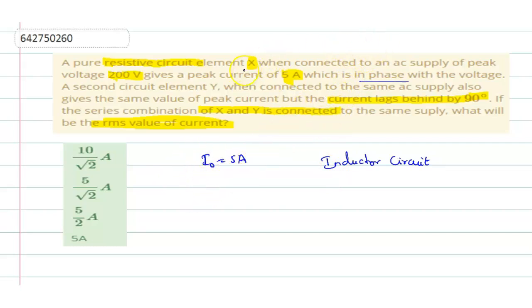So here, first we shall write it for resistive circuit. In the case of resistive circuit, I0 will be equal to V0 by R. So you are supposed to find out R. So R will be equal to V0 by I0. V0 peak value, they have given it as 200 volts. I0 is the value which we have found out, it is 5A. So this gives you 40 ohms.